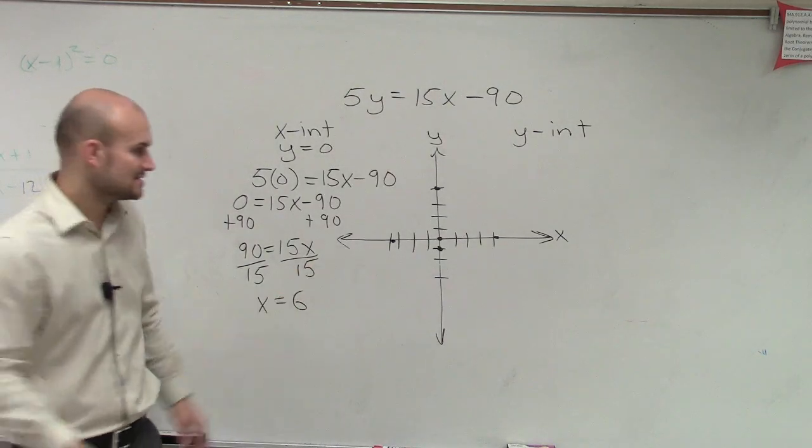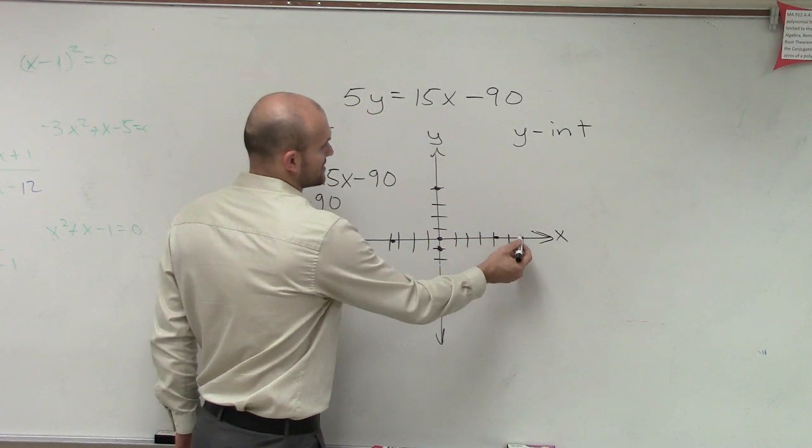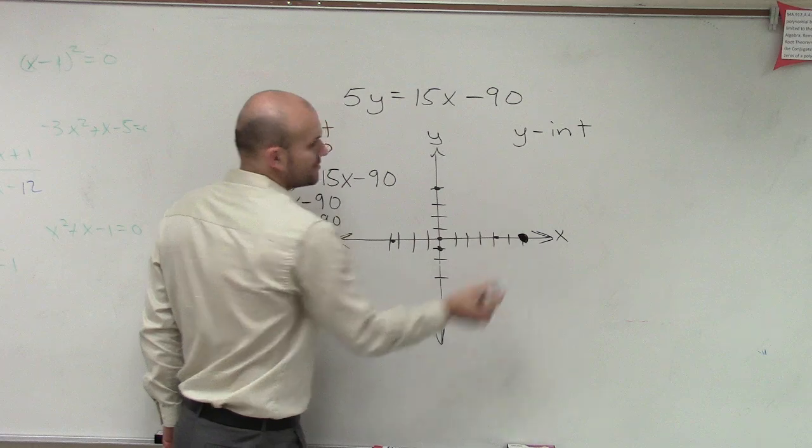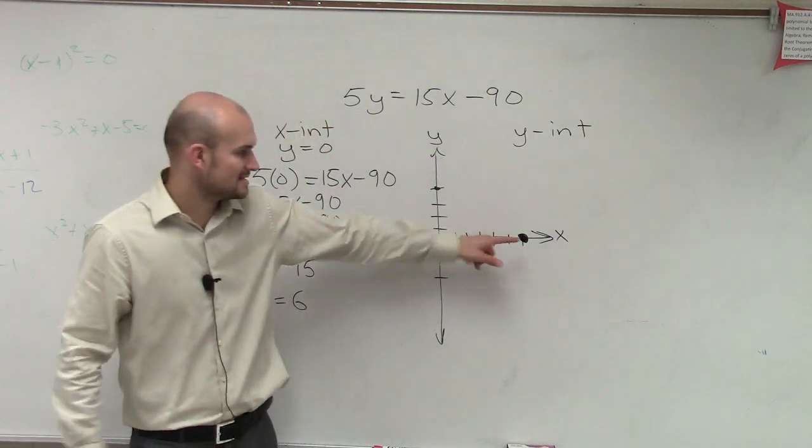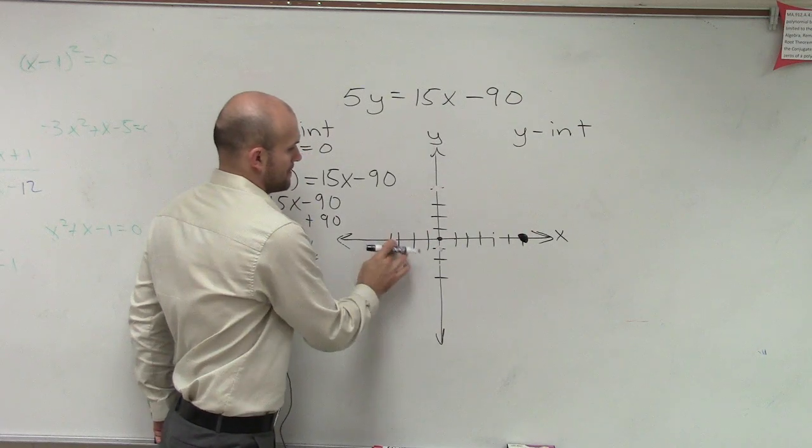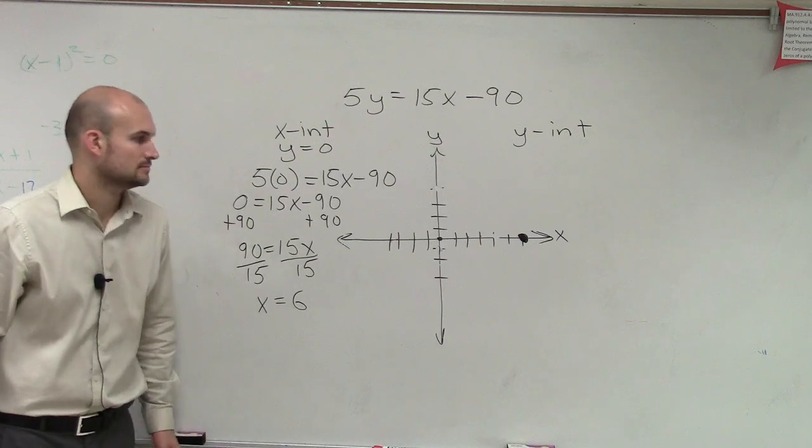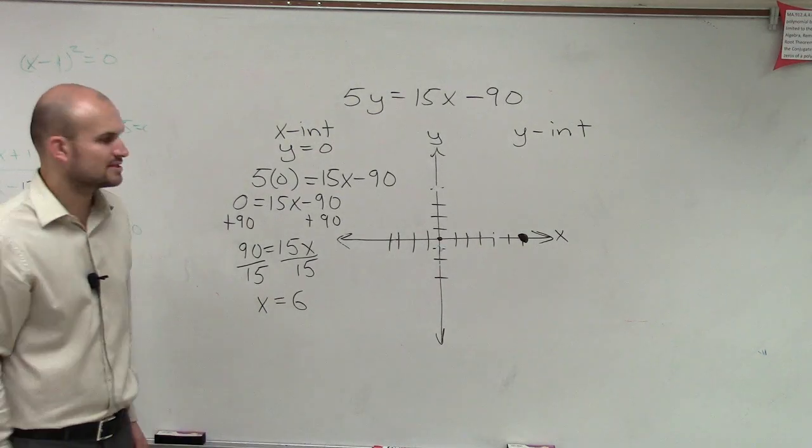So that means my x-intercept is at 1, 2, 3, 4, 5, 6. And you make a nice big dot there. So that means my graph crosses at 6. We can kind of erase these so they don't confuse you guys. OK. Why is there not 0? Because that's the origin. It's just the 0, 0.